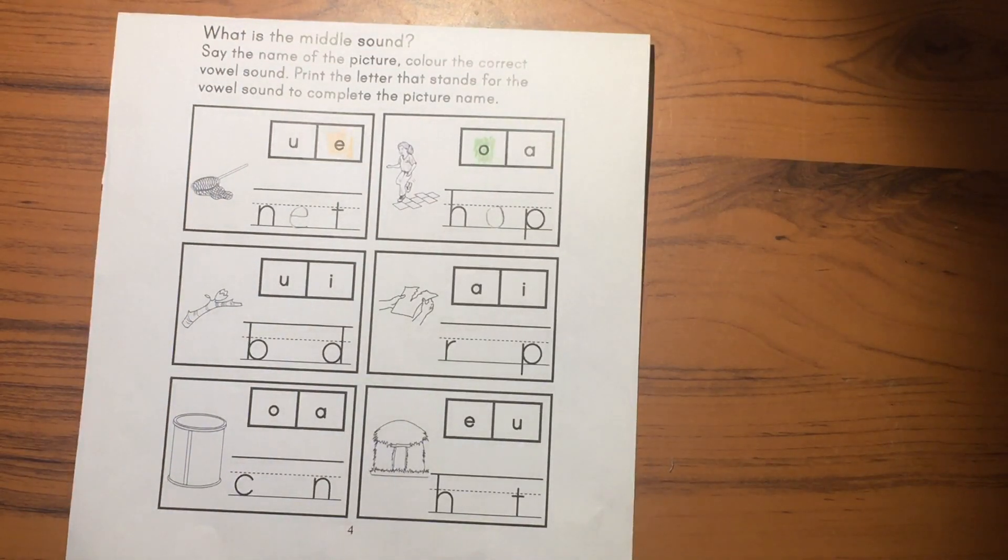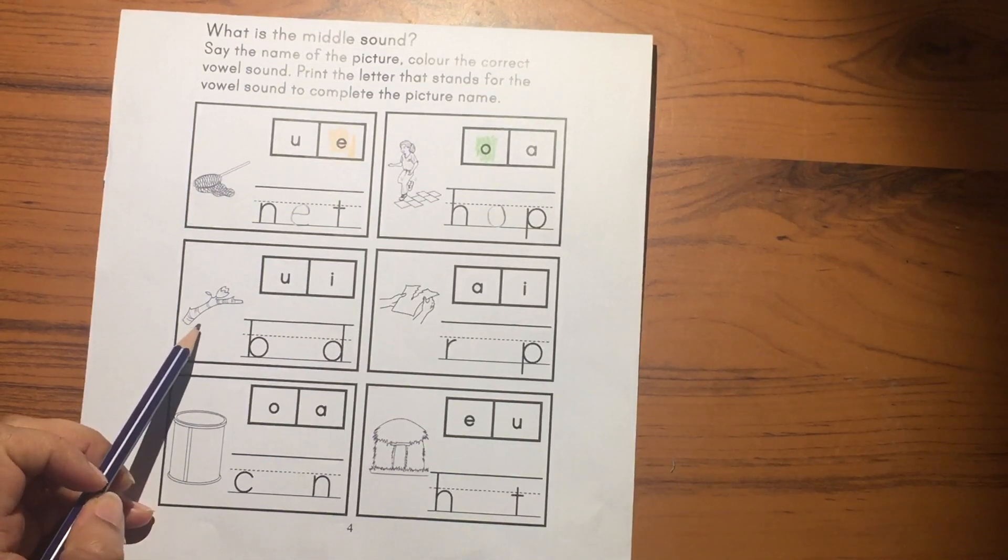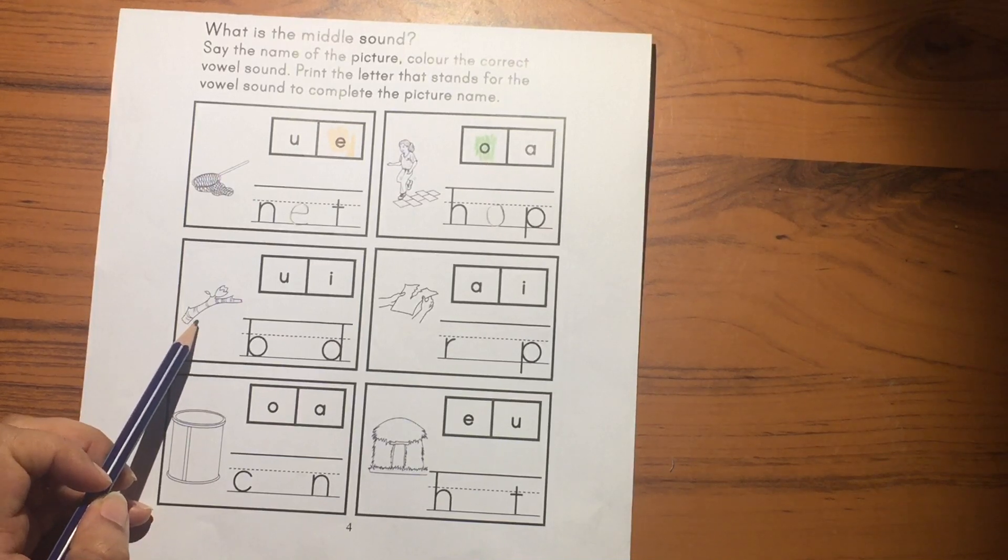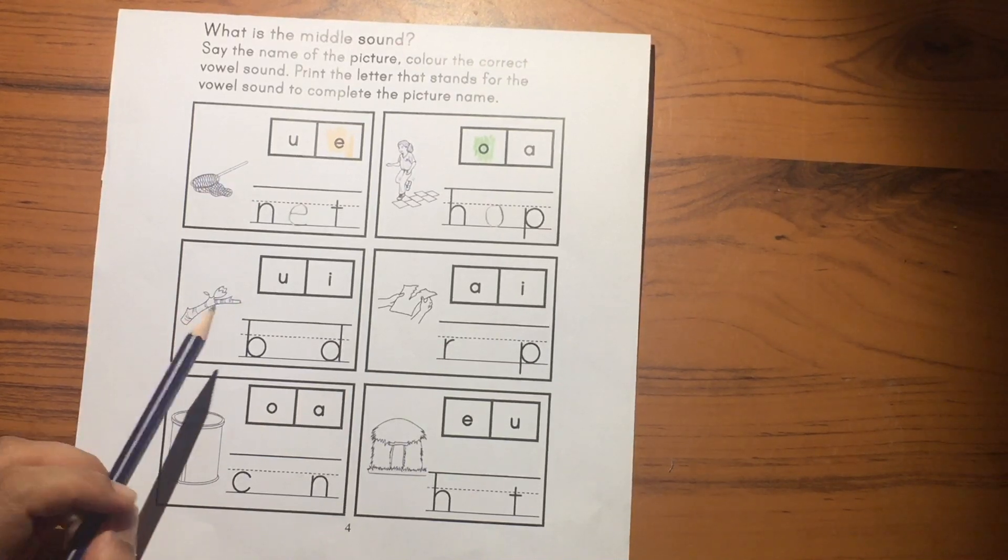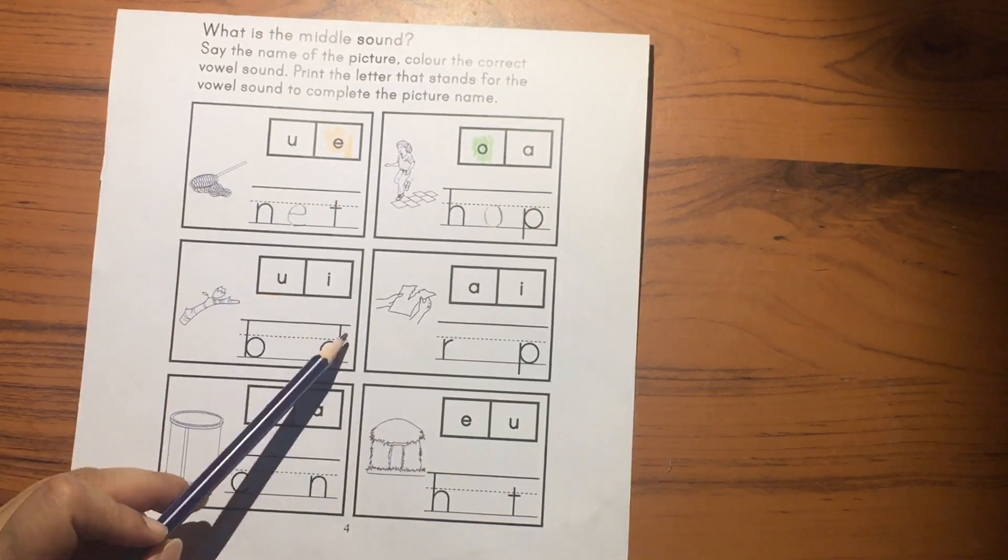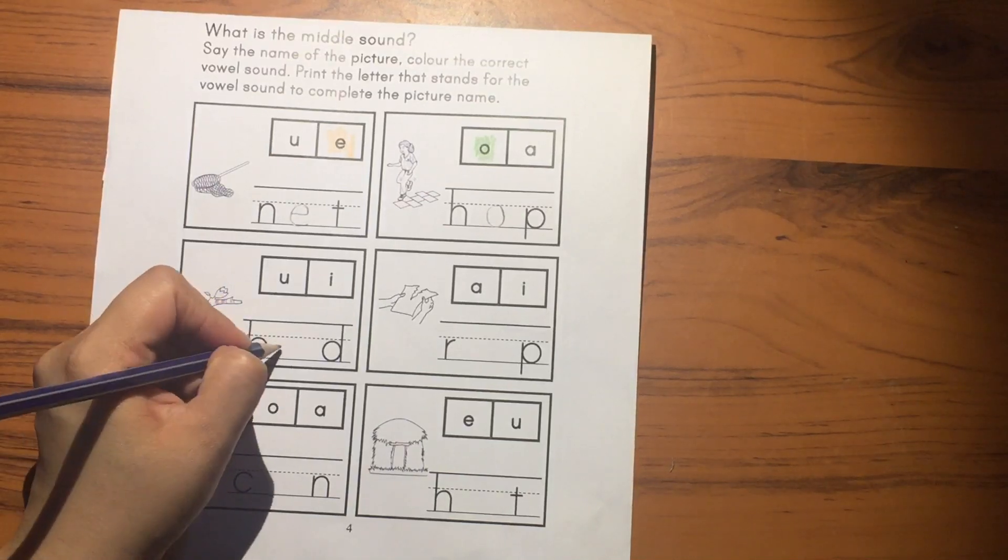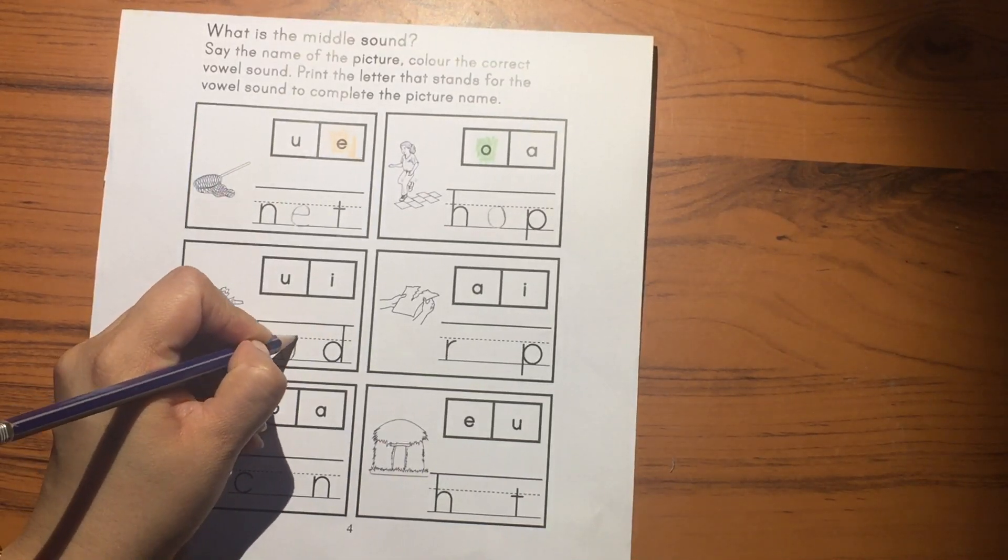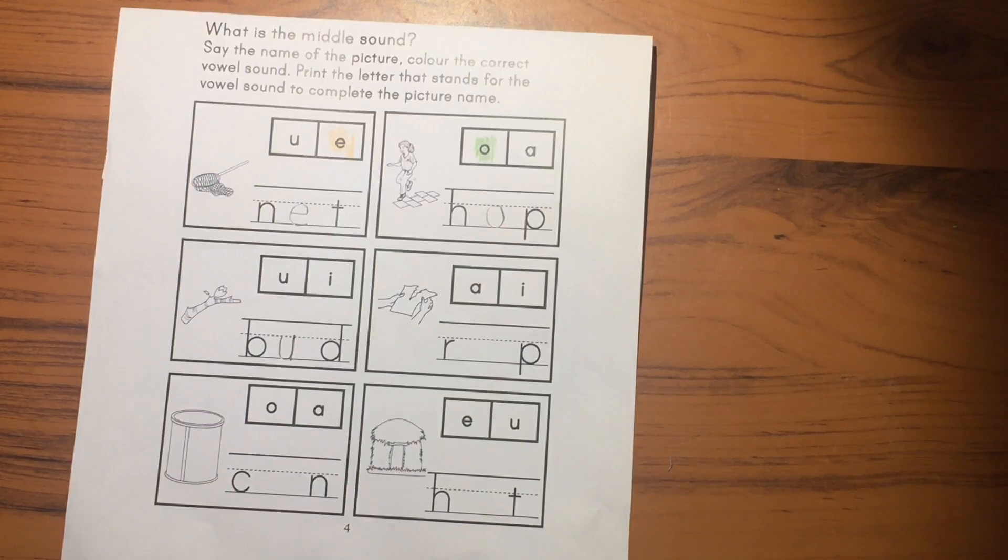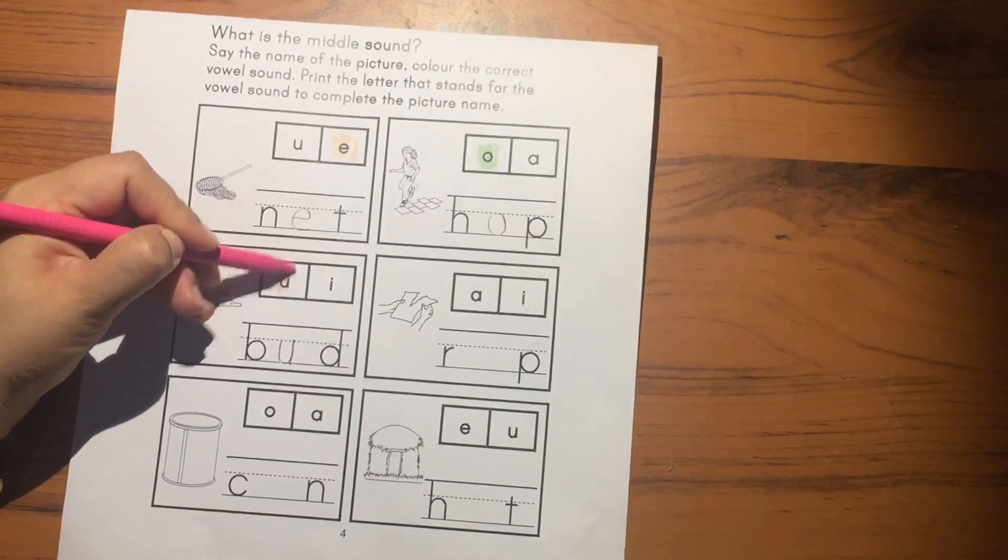The next picture is bud. What is the middle sound for bud? B-U-D. U. So you will write U here. Bud. And you will color the U vowel.